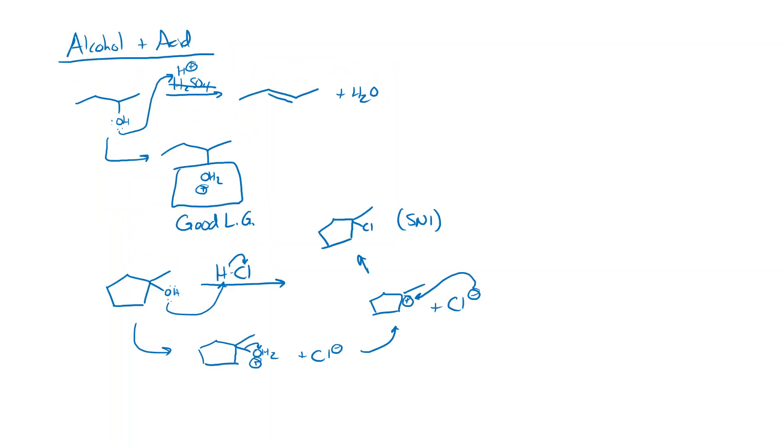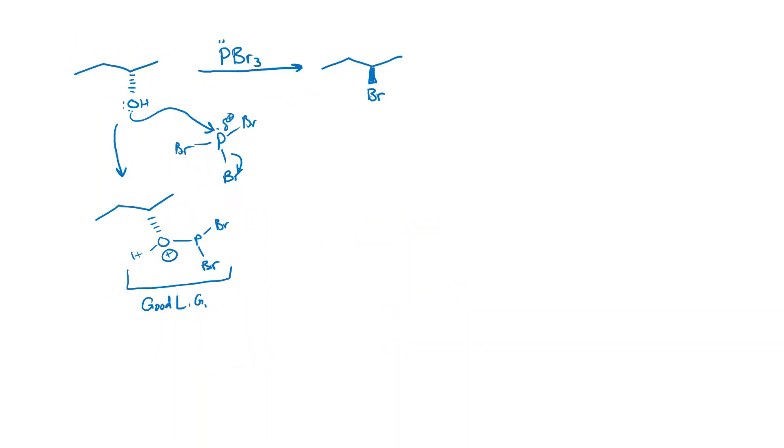So this looks suspiciously like what we did with H+. Alcohol plus acid makes a good leaving group. Alcohol plus Lewis acid makes a good leaving group. So what happens when we make a good leaving group? Well, now we've got a good leaving group and we've got Br-, which is a reasonably good enough nucleophile that it can come in and do an SN2 process. No carbocations here. We're just getting an SN2 where we invert the stereochemistry plus phosphorus attached to OH, attached to Br, attached to Br.